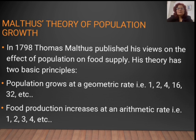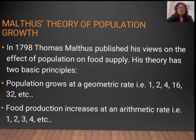In 1798, Thomas Malthus published his views on the effects of population on food supply. His theory has two basic principles: one is that population growth has a geometric rate — 1, 2, 4, 8, 16, 32, etc. — and food production increases at an arithmetic rate — 1, 2, 3, 4, and so on.